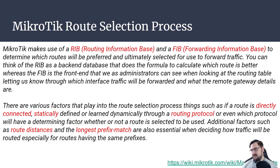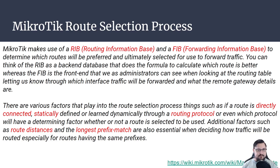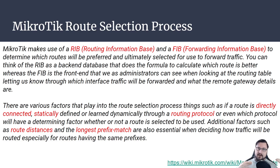Mikrotik's route selection process has two things happening in the back end. It's got a Routing Information Base, or RIB — think of that as the calculations happening in the background. We as administrators can alter some of those calculations using route filters or mangle rules, but mostly it's a calculation we don't see. It figures out the best path to a destination. Then we see the FIB, the Forwarding Information Base — what we see when we open IP routes is the end result after the RIB has done its work.